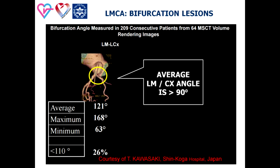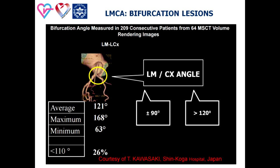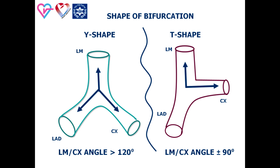In the majority of cases, the left main to circumflex angle is more than 90 degrees and the average angle is about 120 degrees. We divided patients into two groups according to the left main to circumflex angle: the first group with an angle close to 90 degrees, and the second with an angle of more than 120 degrees. We can classify two shapes of left main bifurcation: T-shape with an angle close to 90 degrees, and Y-shape with an angle of more than 120 degrees.